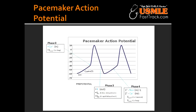The slope of which phase of the pacemaker action potential determines the heart rate? The slope of phase 4 in the SA node determines the heart rate. What drugs decrease the rate of diastolic depolarization and decrease heart rate? The drugs that decrease the rate of diastolic depolarization and heart rate are ACh and adenosine.